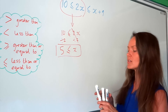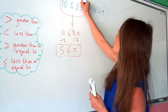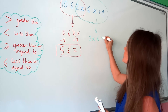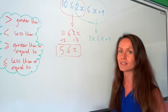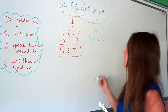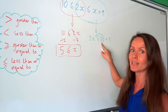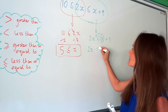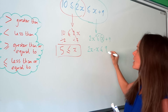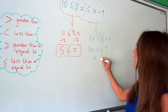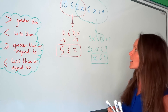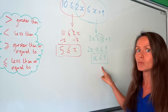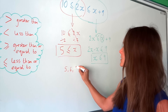Now we look at the other side. I rewrite that section of the inequality and solve it. Get x's on one side and numbers on the other — remember to move the smaller x term. When that x moves to the other side it turns negative. So I've got 2x minus x, and the positive 9 stays positive. 2x minus x is 1x, so x is less than or equal to 9.